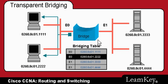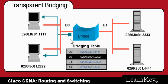In this instance, this node is actually transmitting to this node on the same segment. As a result, the bridge also hears that frame, but it realizes that this destination address is also on Ethernet 0, so it will not attempt to forward it out Ethernet 1.